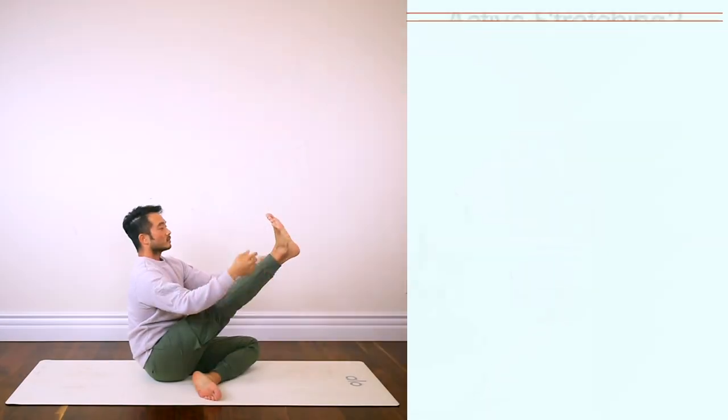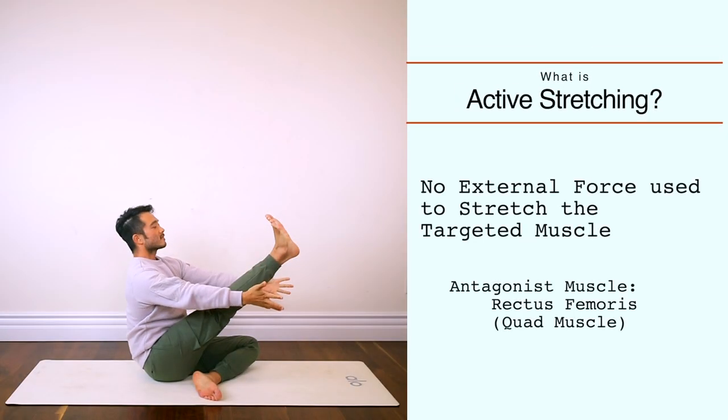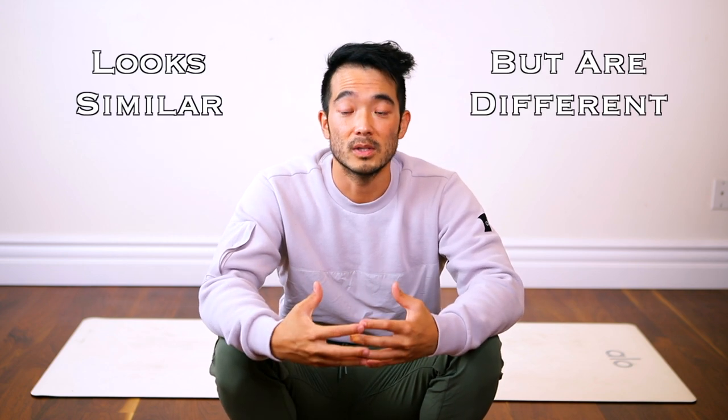So an example like this would be an active stretch. In this case, you're using your rectus femoris, which is your quad muscle — and that is the antagonist, the opposite muscle group to your hamstring muscle. Isometric stretch and a passive stretch look visually very similar.